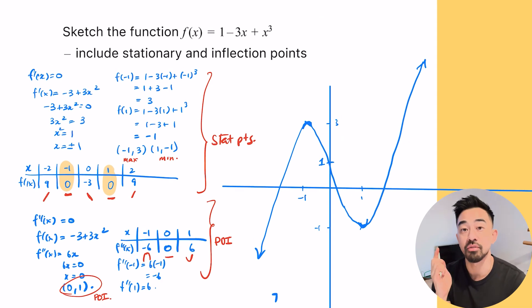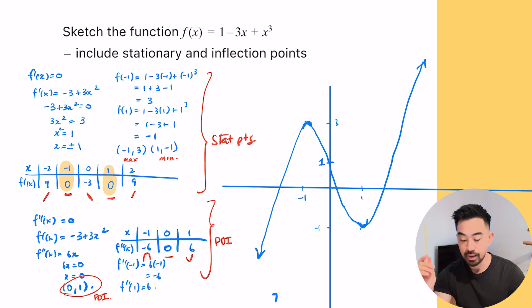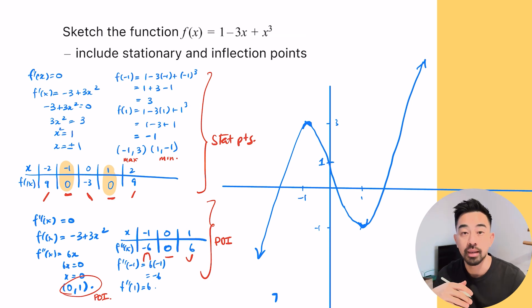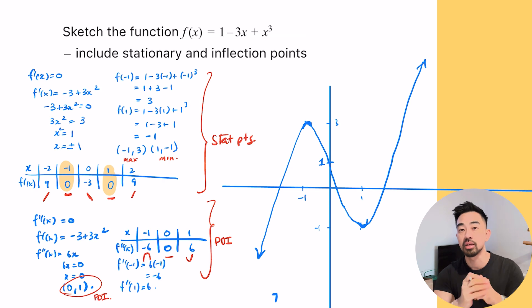We won't bother with x-intercepts for these graphs — we're just illustrating how to find points of inflection and stationary points. That's it for today. If you have any questions, let me know in the comments below. If you want to see more videos like this or videos on other topics, let me know. Thanks for watching, and I'll see you in the next one.